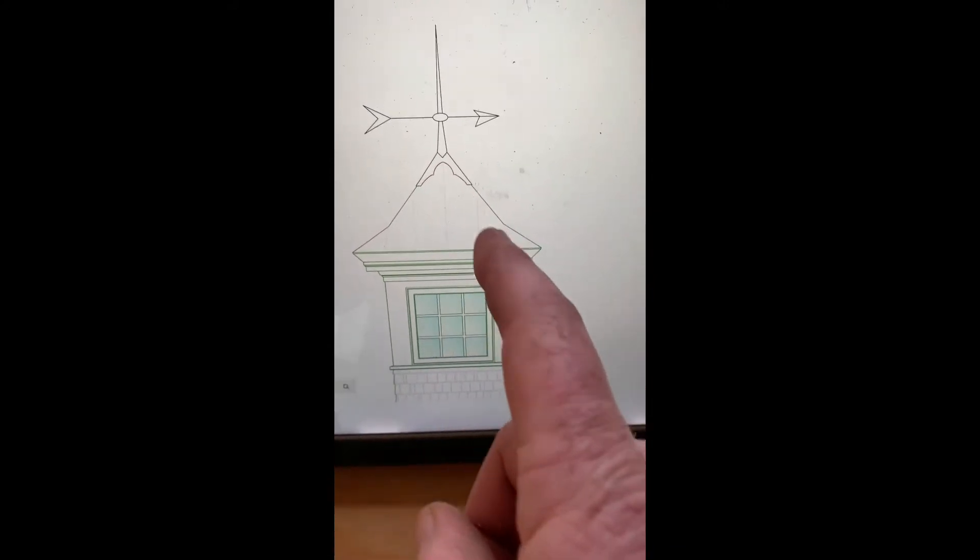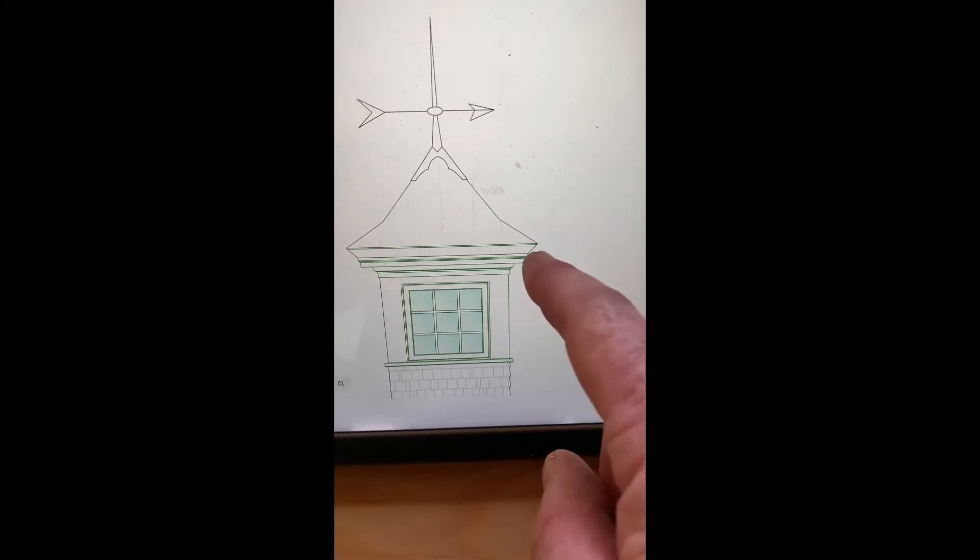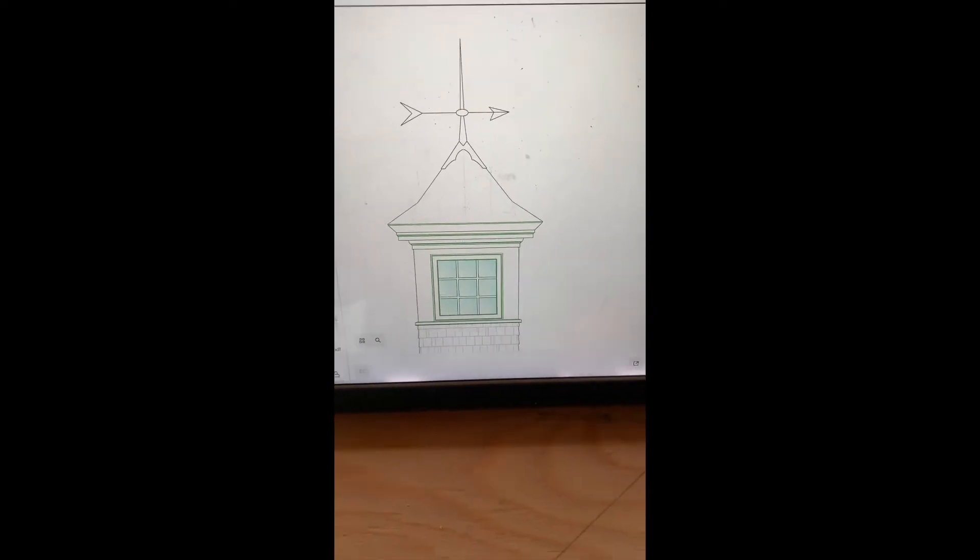If you notice, it comes down in a 15 pitch and then kicks to an 8 pitch, terminated at the front. So here's how I draw it out in section.